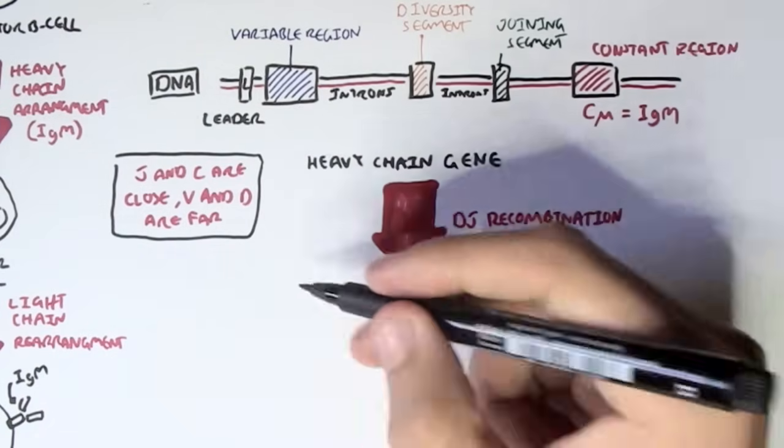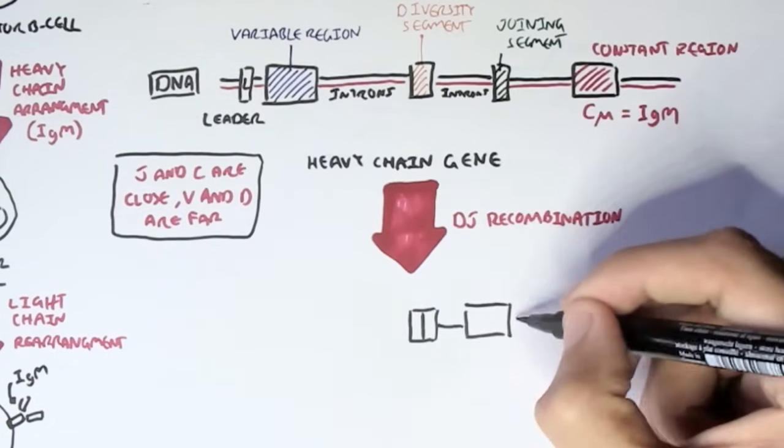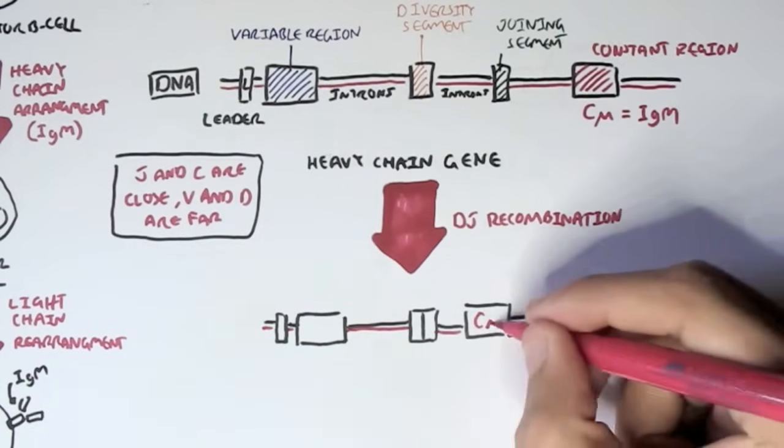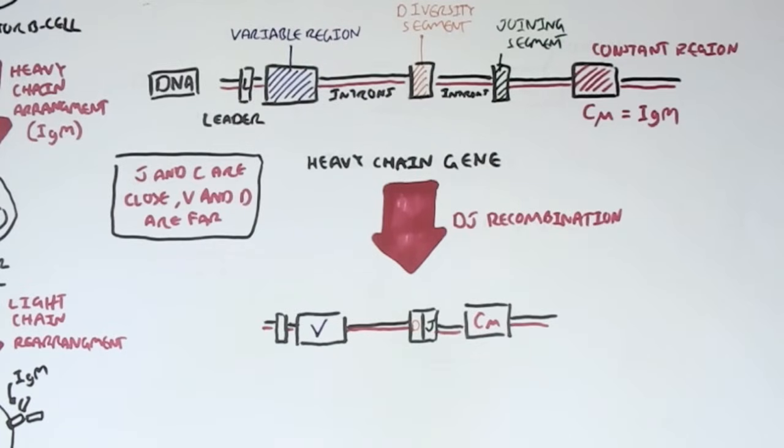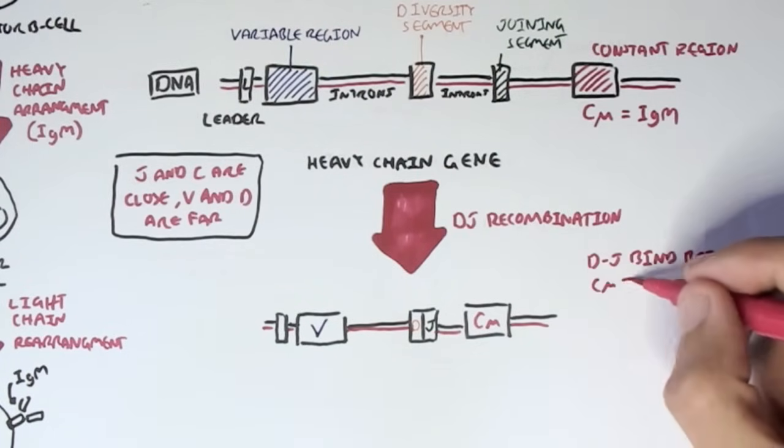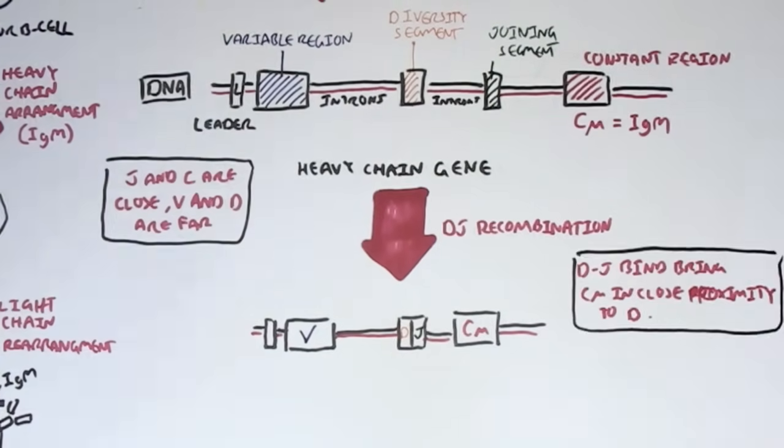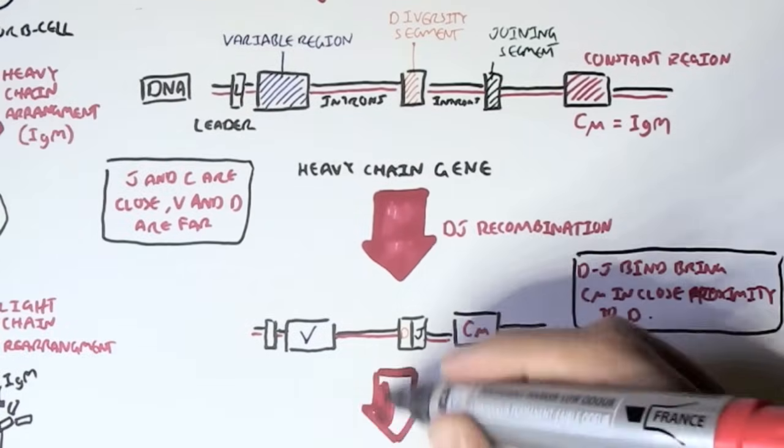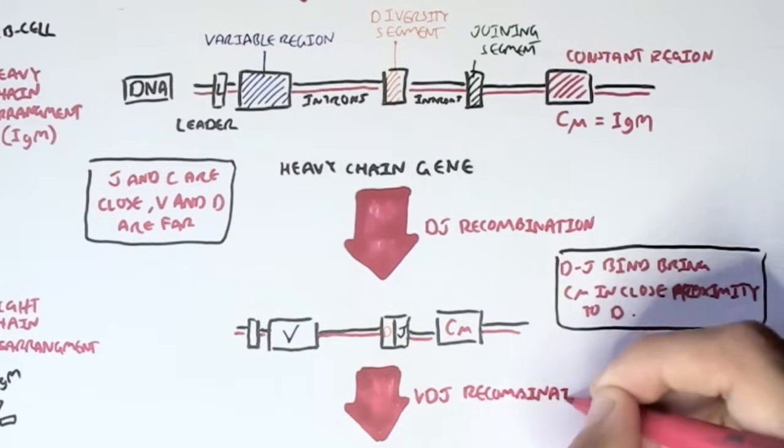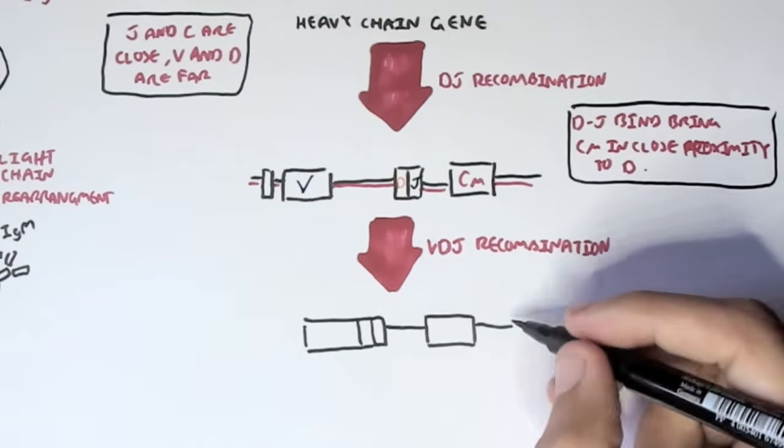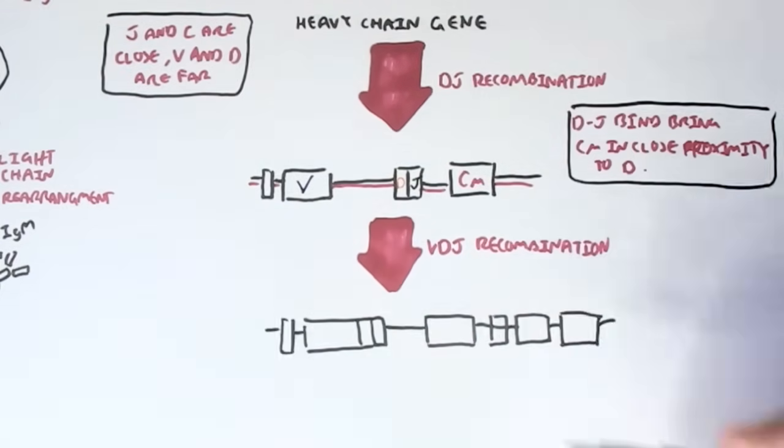So the first process that occurs is that we have J and D recombination in the heavy chain. J and D recombination is where the J will bind to the D segment to bring C in close proximity. Next we have V, D, J recombination, where the D and the J segment will bind to the variable region, so bringing the C, the constant mu, in close proximity with everything else.